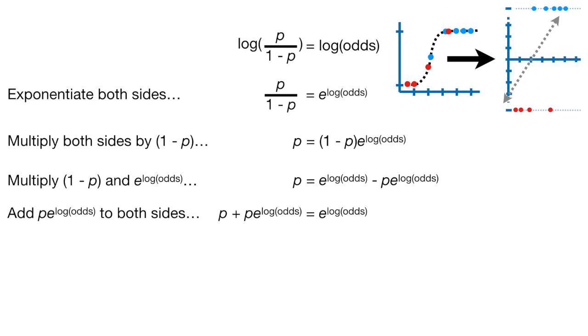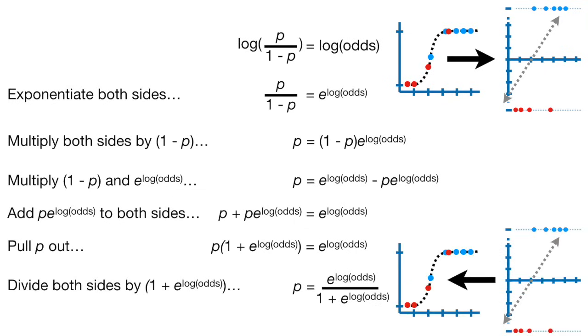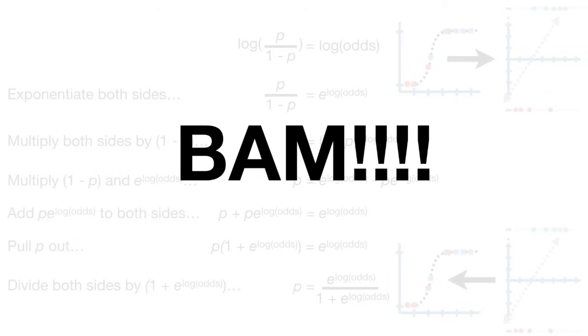Then we add p times e to the log odds to both sides. Then we pull p out on the left side of the equation. Lastly, we divide both sides by (1 + e to the log odds). BAM!